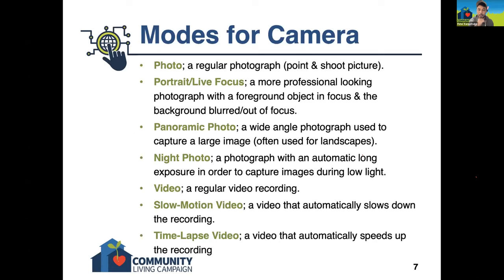There's, of course, the first mode: a regular photograph, which is just a simple point and shoot. You're pointing your camera at an object, and then you tap that capture button to take the photograph. It's just one of the average typical photos that you would take.